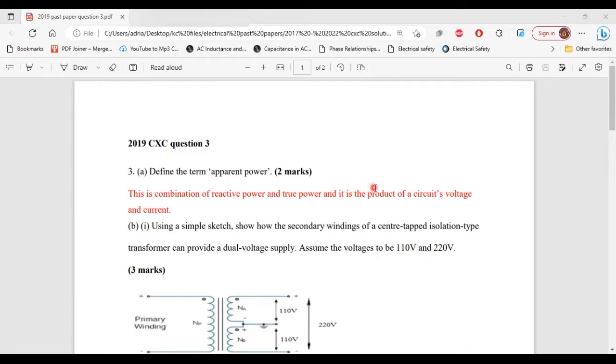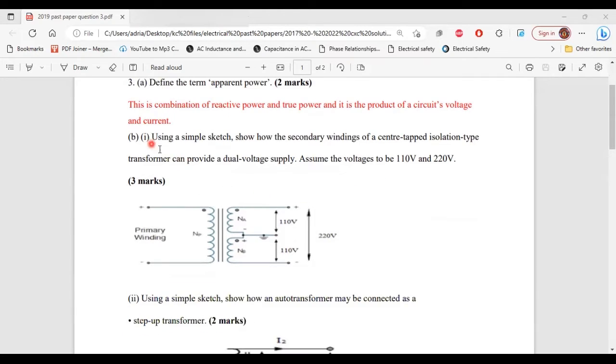Let's move on to part B. Part 1 of B says using a simple sketch show how the secondary windings of a center-tapped isolation type transformer can provide a dual voltage supply. Assume the voltages to be 110 volt and 220 volt. So here I have a diagram with the secondary side of the isolation transformer tapped right here in the center.